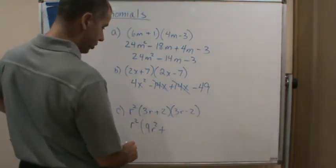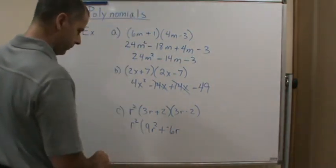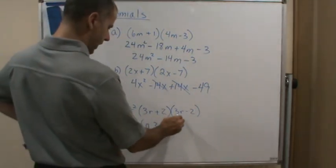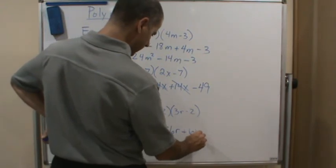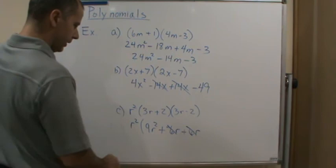And then 2 times 3r gives me plus 6r - and look at that, those cancel - and then I end up with negative 4 at the end. Now what I'm going to do is